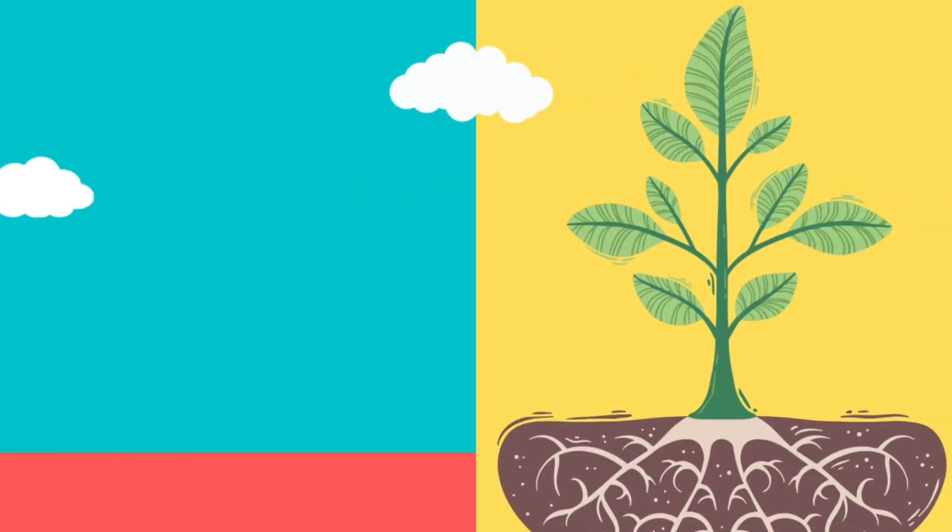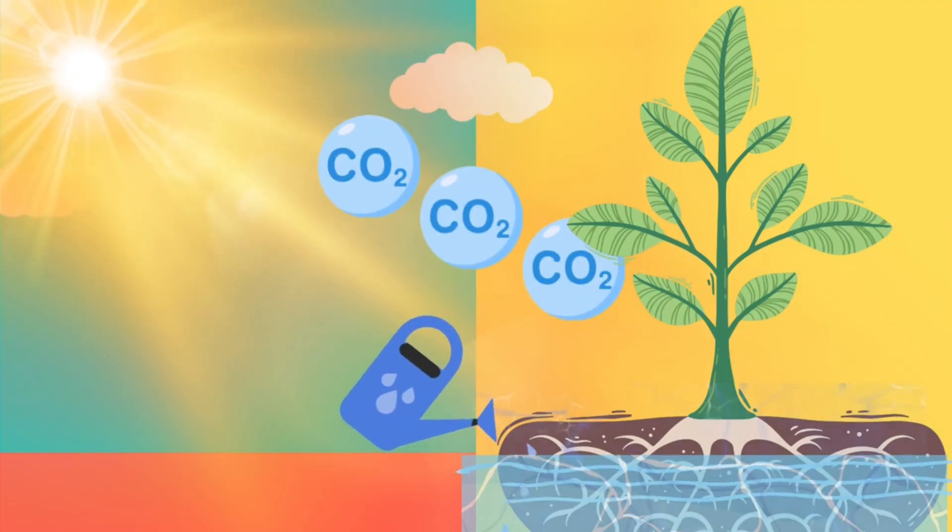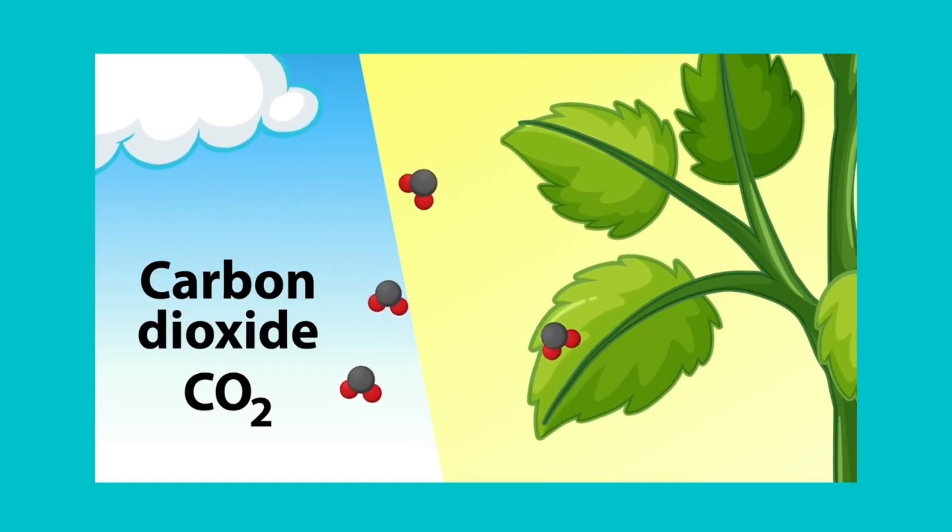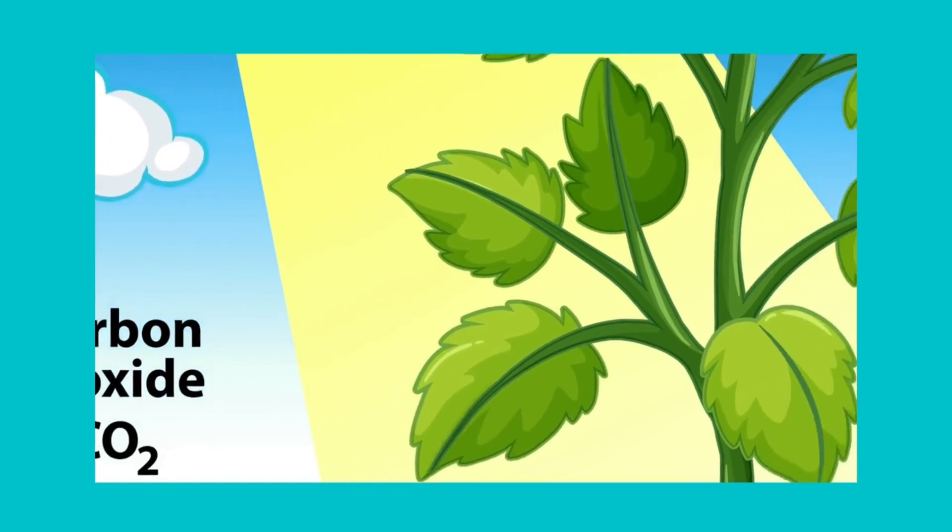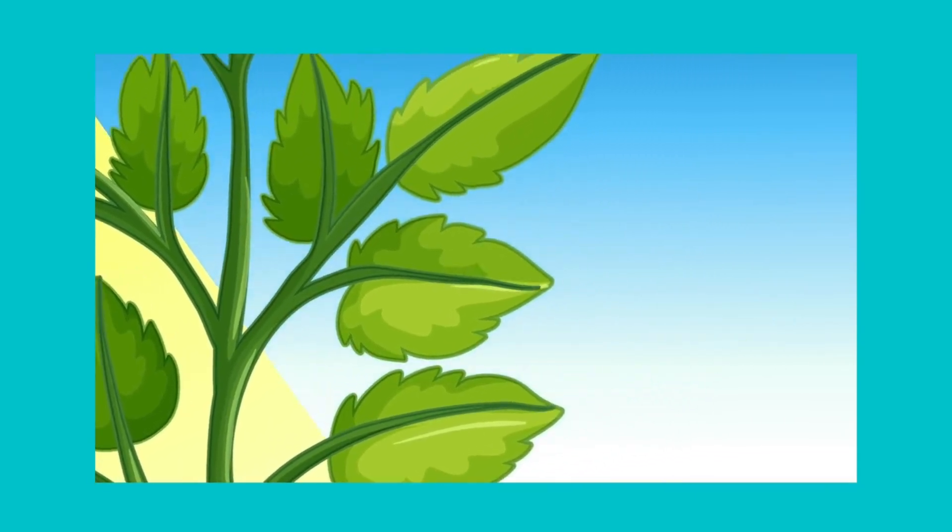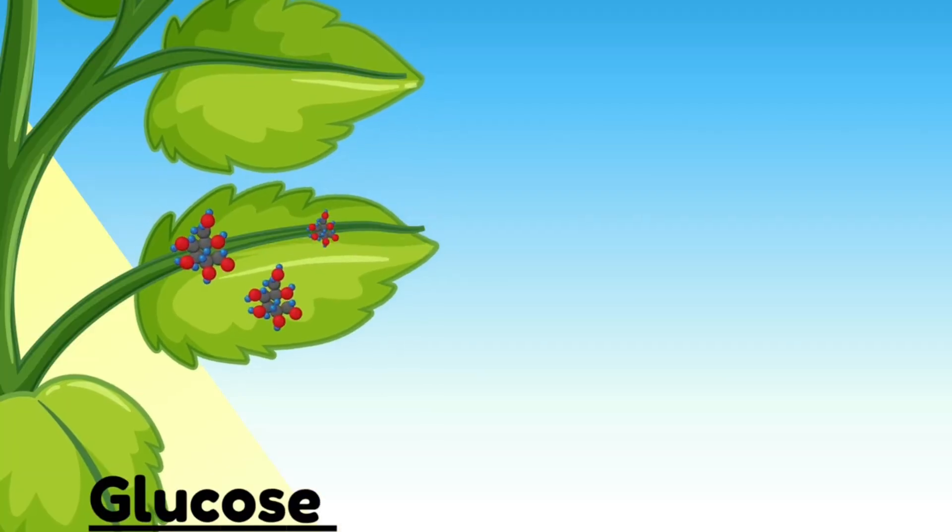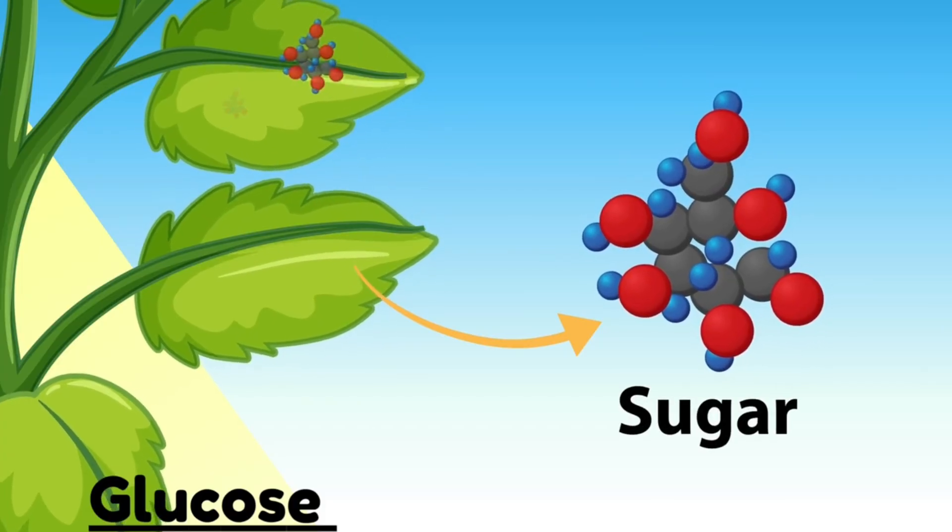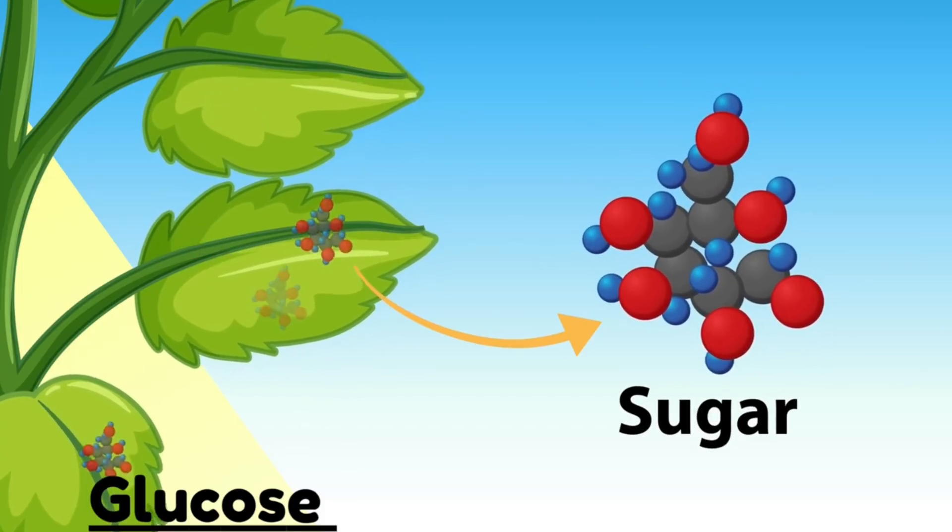So what happens next? The chlorophyll chef uses the power of sunlight. It mixes carbon dioxide from the air with water from the soil. This cooking makes food for the plant, a sugar called glucose. This wonderful cooking process is called photosynthesis.